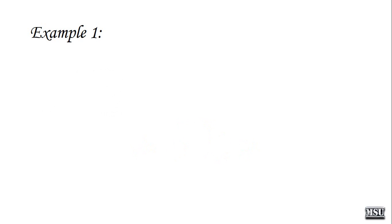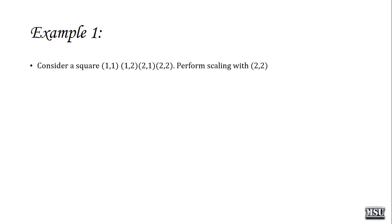Let's discuss an example. Consider a square with vertices 1 comma 1, 1 comma 2, 2 comma 1, and 2 comma 2. These are the four vertices — you connect those vertices to form the square. Perform scaling with respect to scaling factor 2 comma 2. Since the scaling vector values are greater than 1, the square size will obviously be increased. So SX equals 2 and SY equals 2.